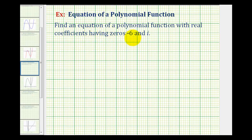First, if we have the zeros of a polynomial function, it gives us information about the factors of the function. And also if we have complex zeros, complex zeros always come in conjugate pairs.